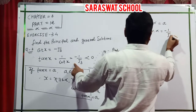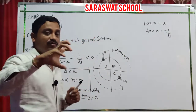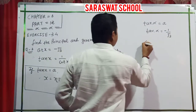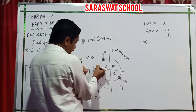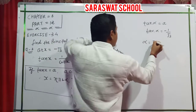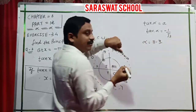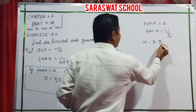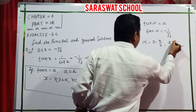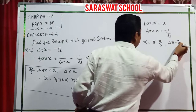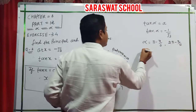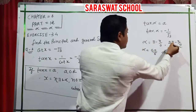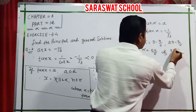My a value is minus 1 by root 3. Tan is negative in the second and fourth quadrants. In the second quadrant: pi minus pi by 6. When tan is 1 by root 3, the angle is 30 degrees — pi by 6. So the answer is 5 pi by 6. In the fourth quadrant: 2 pi minus pi by 6 gives 11 pi by 6.